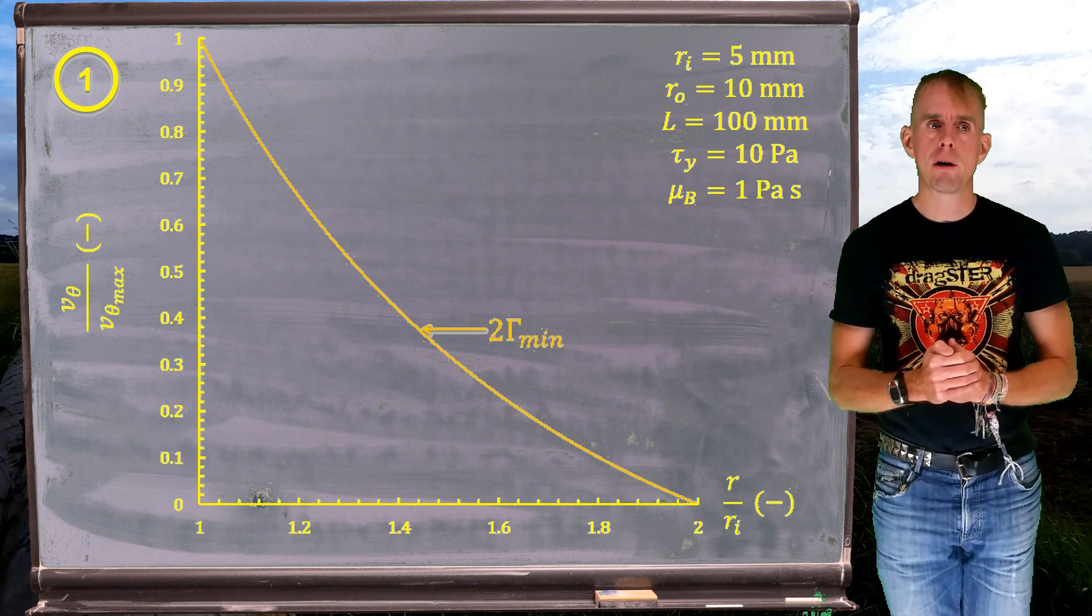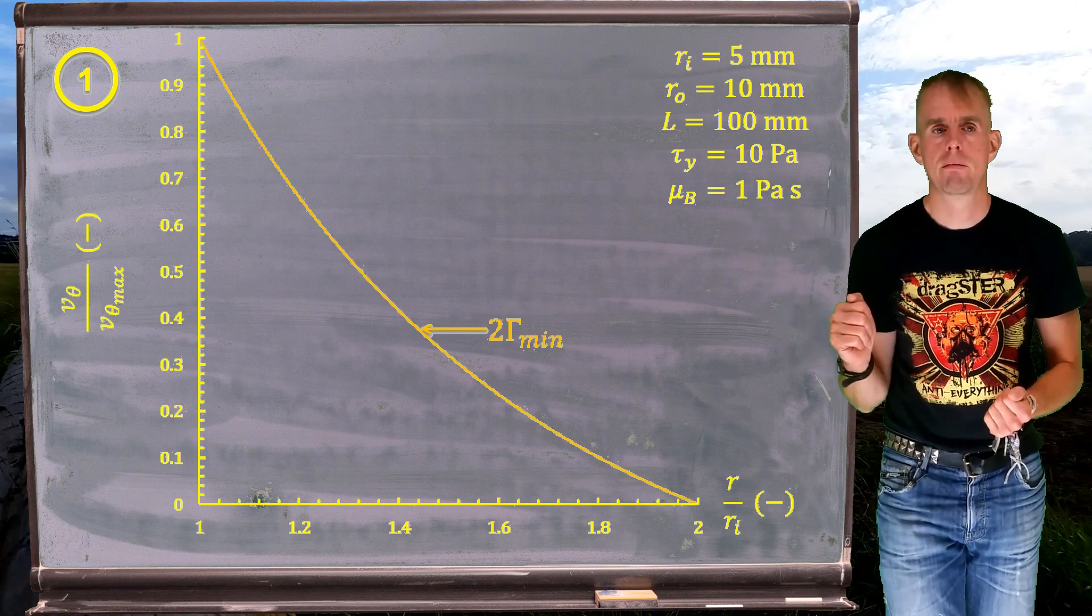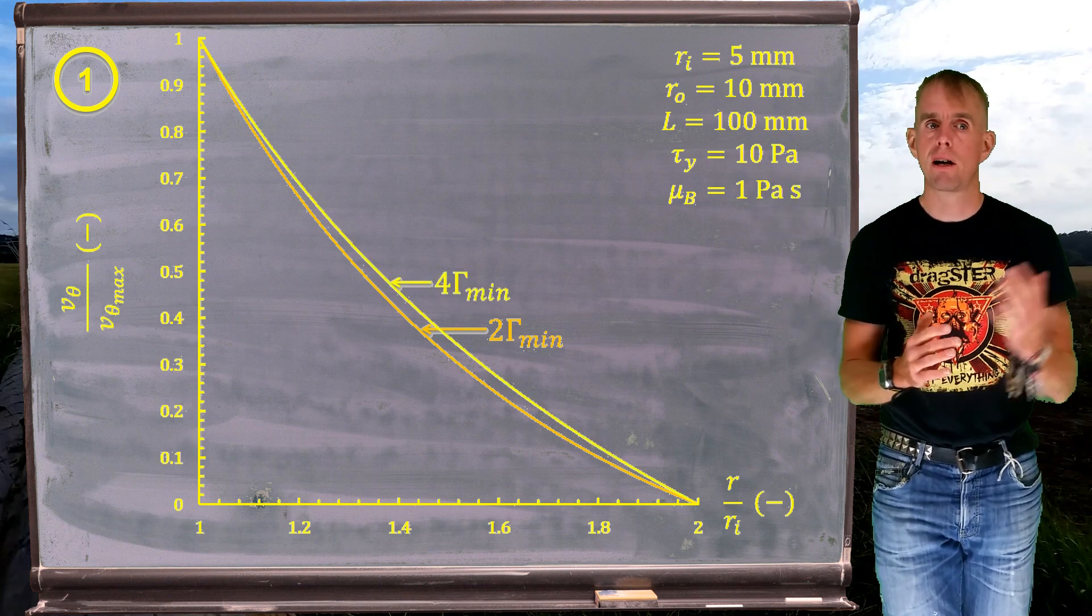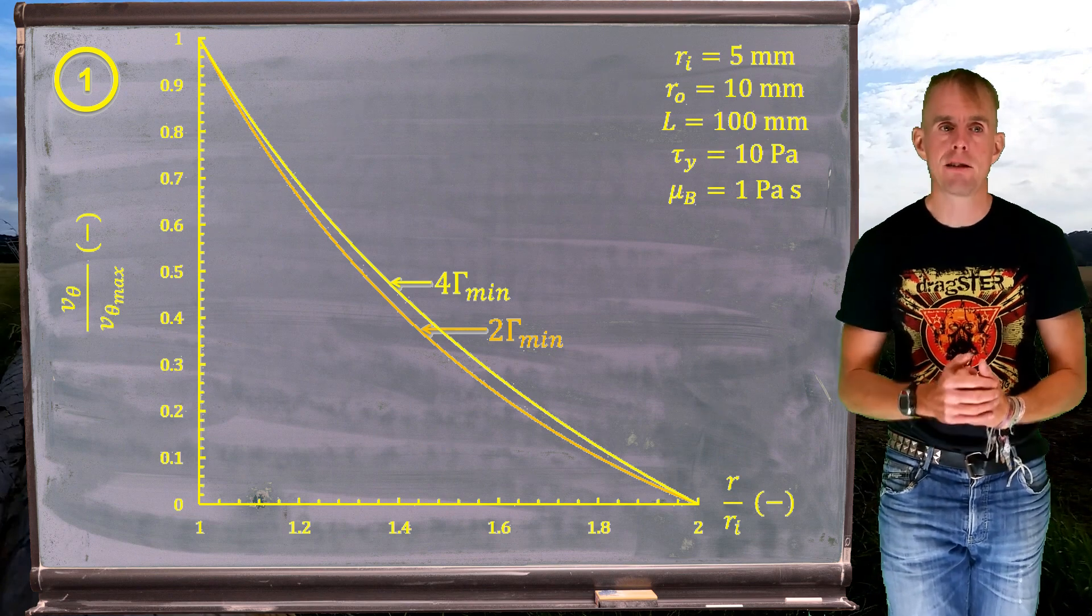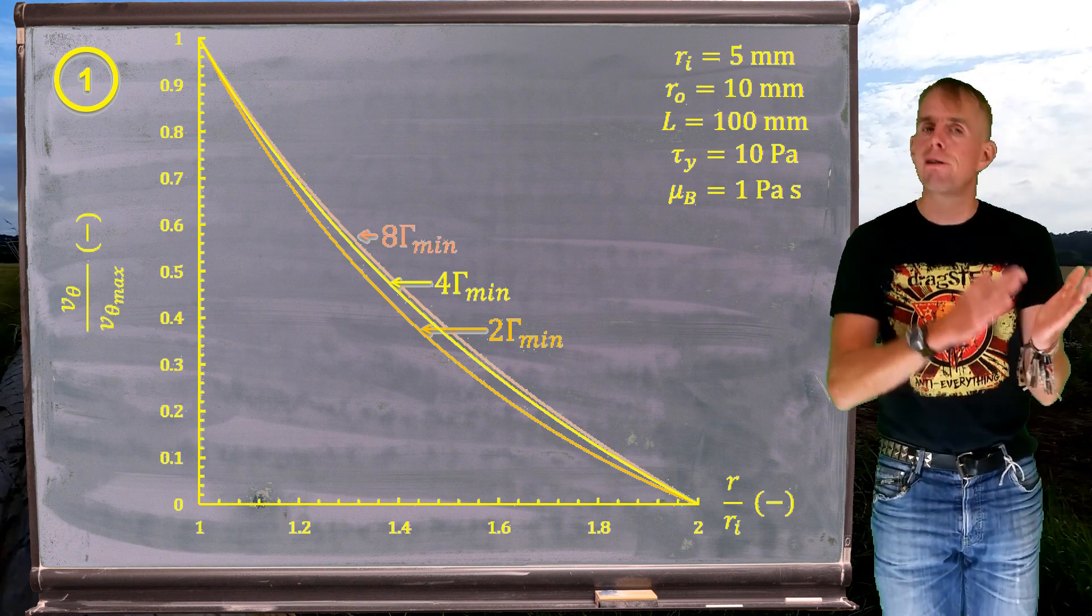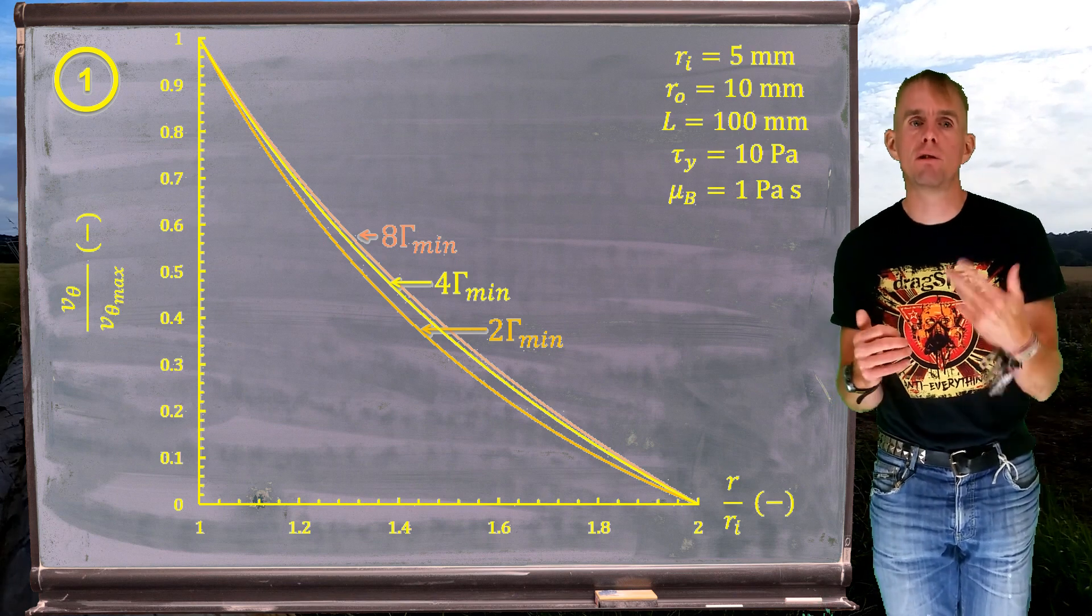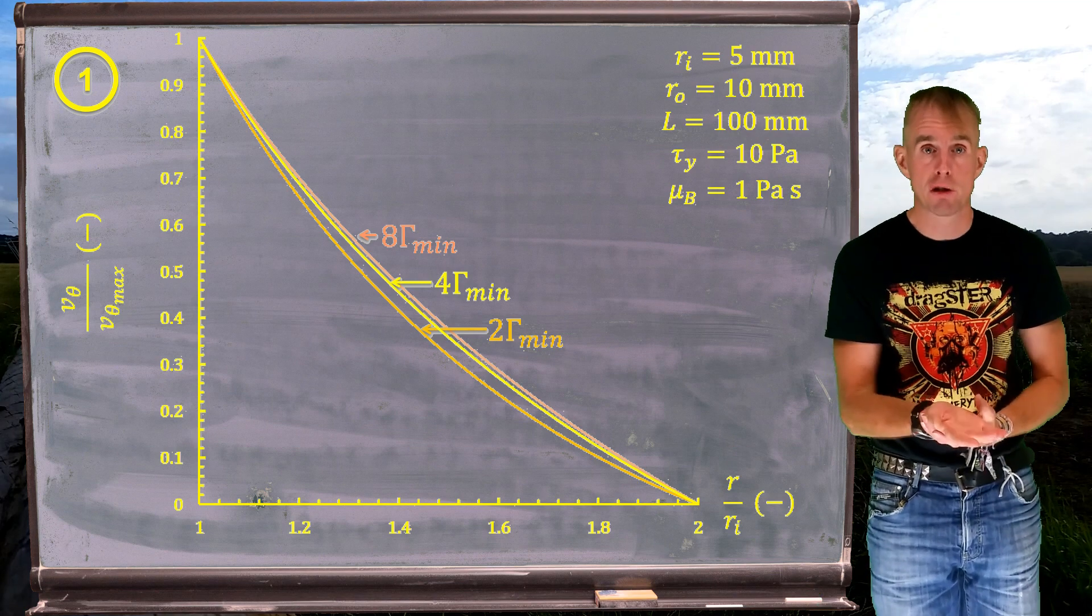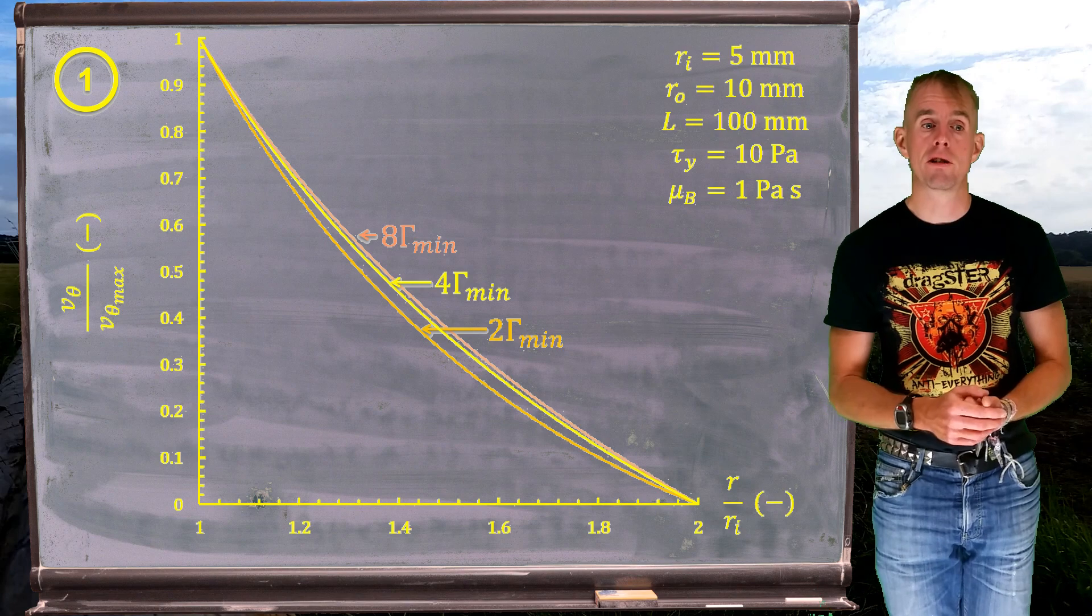So, at twice the minimum torque, I get this kind of relationship. At four times the minimum torque, I get a very similar relationship shifted a little bit. I'll double again and go eight times minimum torque. That's very close to four times minimum torque. So you could see that if I went to 16, 32, 64 times minimum torque, the curves would become indistinguishable from one another, which is a good demonstrator of the result that we just attained.